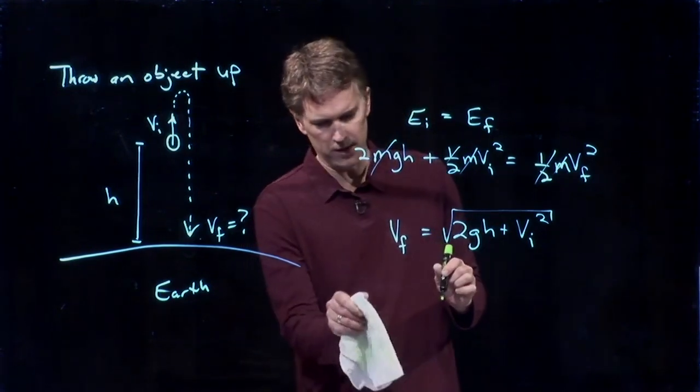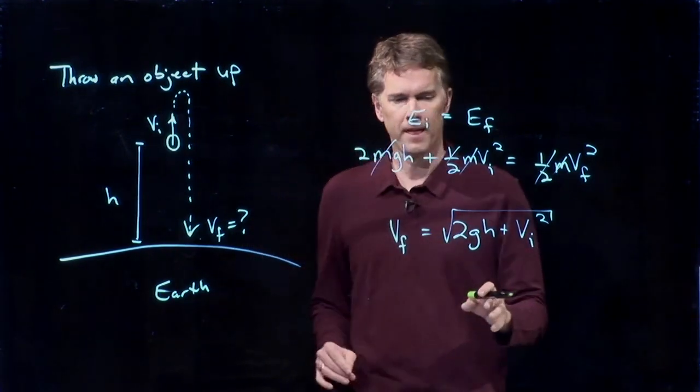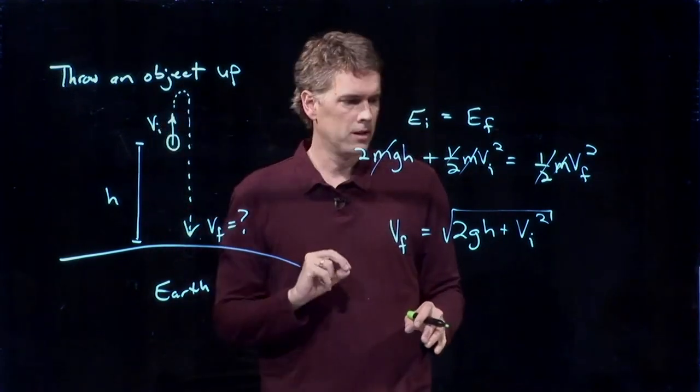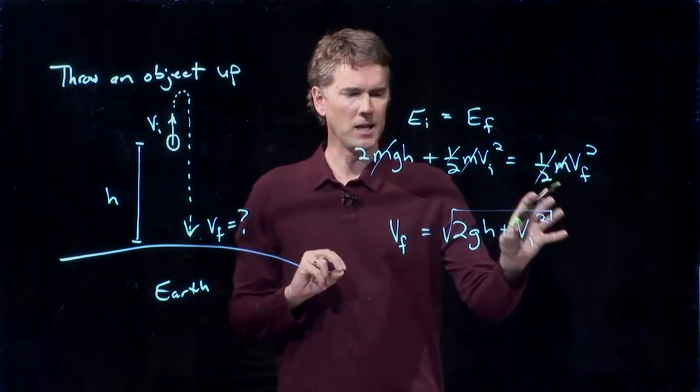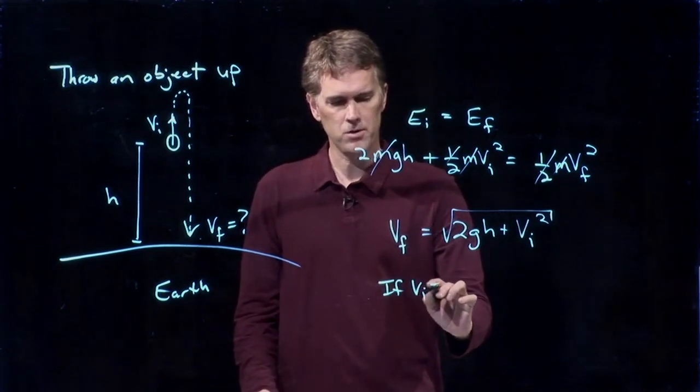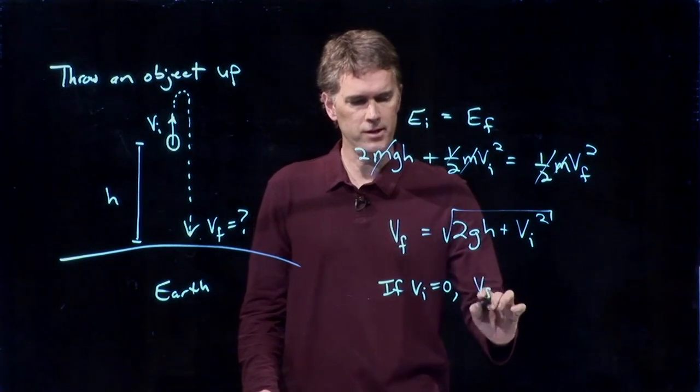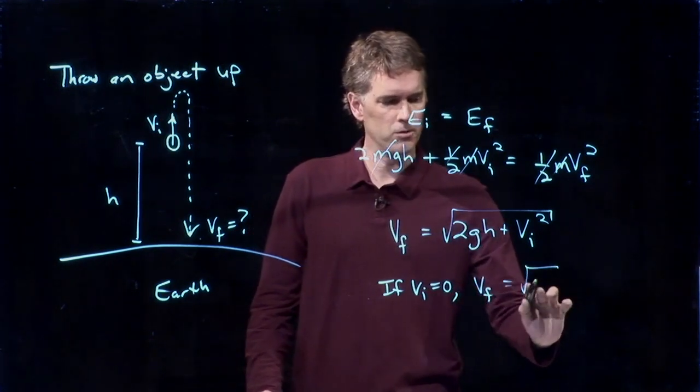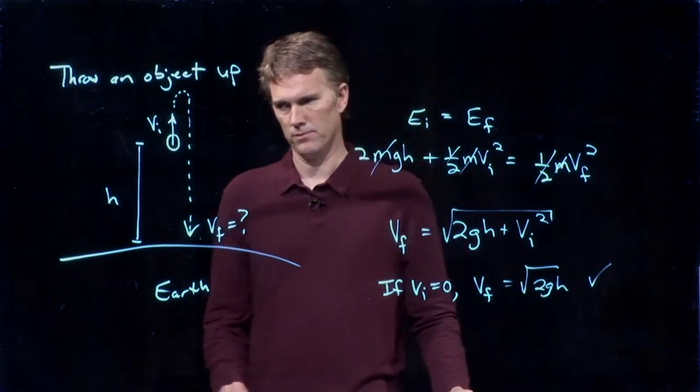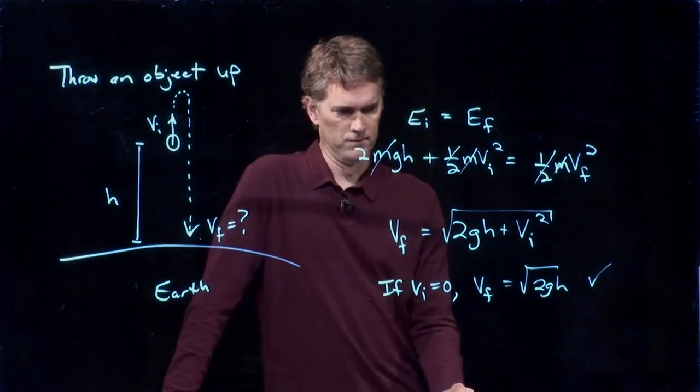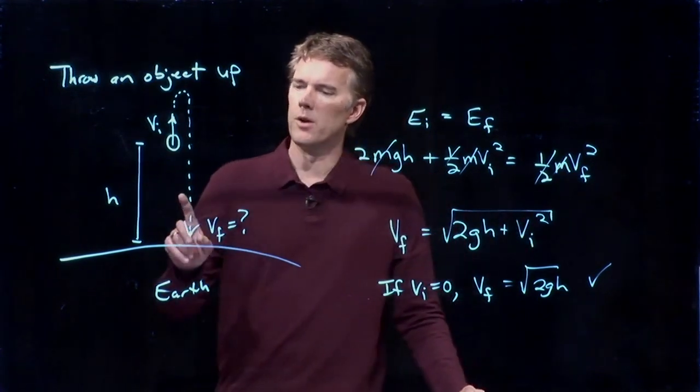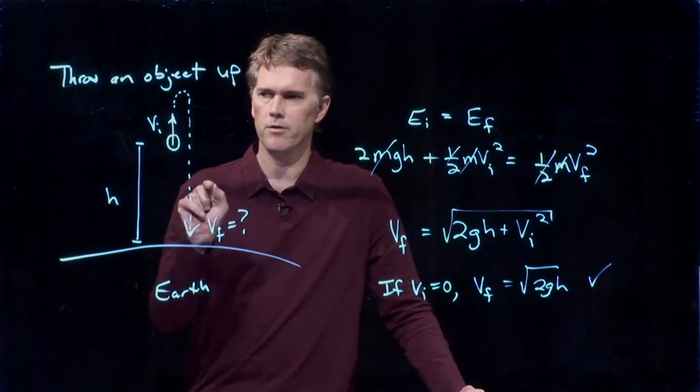And now you look at this result and you want to make sense of it. With what we just did where we drop the object, that would be the case where Vi equals zero. And so if Vi equals zero, then Vf is just square root of 2gh, like we found before. If we increase Vi, then it's going to hit the ground even faster.